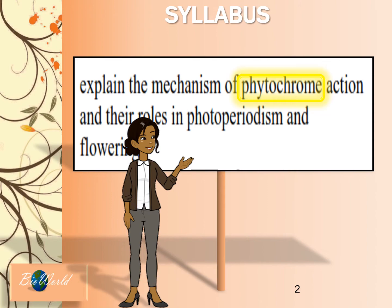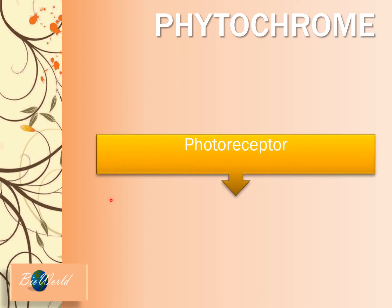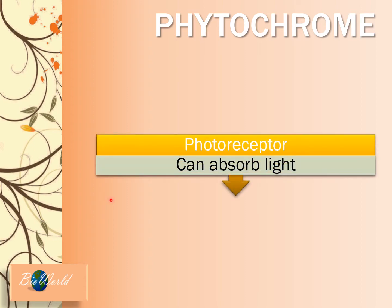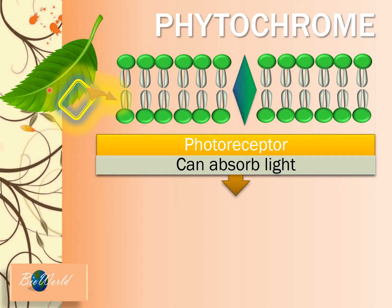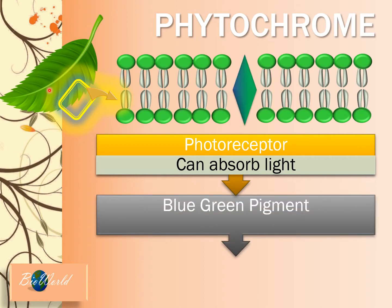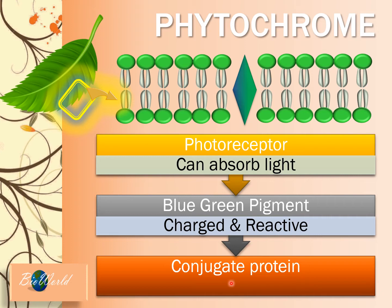Let me start off by introducing phytochromes. Phytochromes are photoreceptors that absorb light. They are located in the cell membrane of the leaf cells and it is a blue-green pigment. The characteristic of the phytochrome is that it is charged, meaning that there are positive and negative charges in the phytochrome, and it is reactive. The reason is because the phytochrome is a conjugate protein that is attached to acid, base, and sulfur.